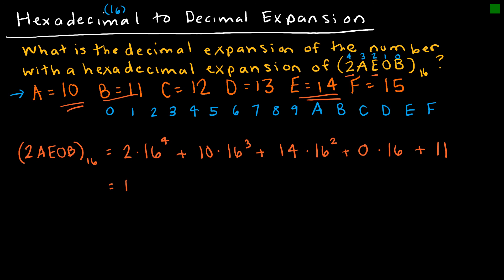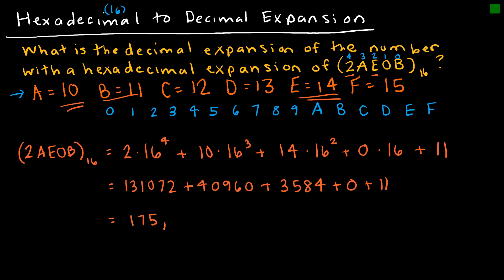I can use a calculator to compute each of those separate values and then add them all up for the final answer. Adding up all of the values gives 175,627. Again, I could write that as base 10 just to be clear, but it's not wrong to omit the base label since that's how we normally write base 10 numbers.